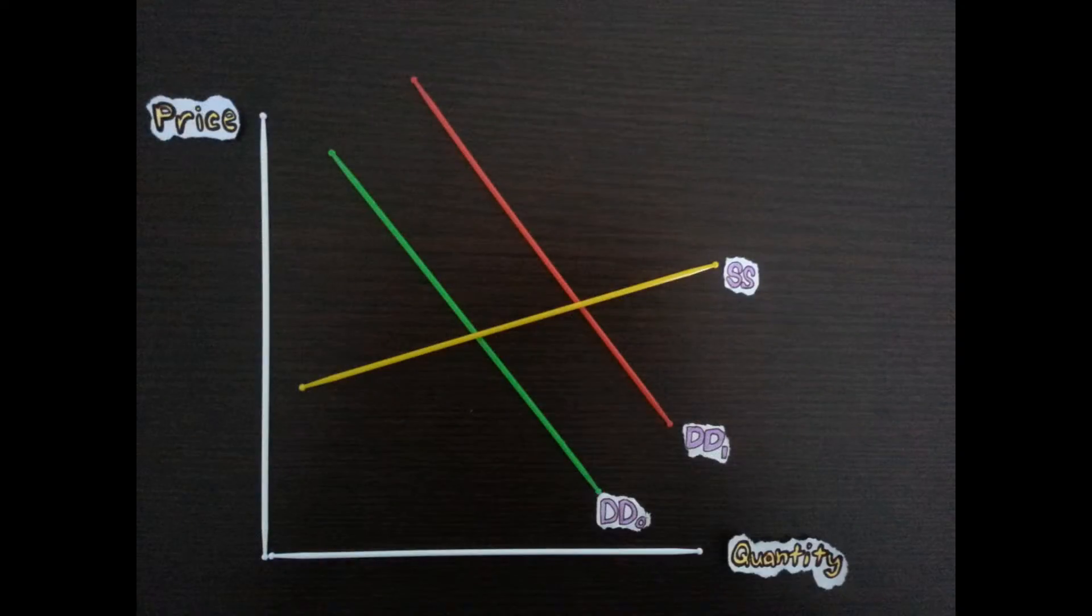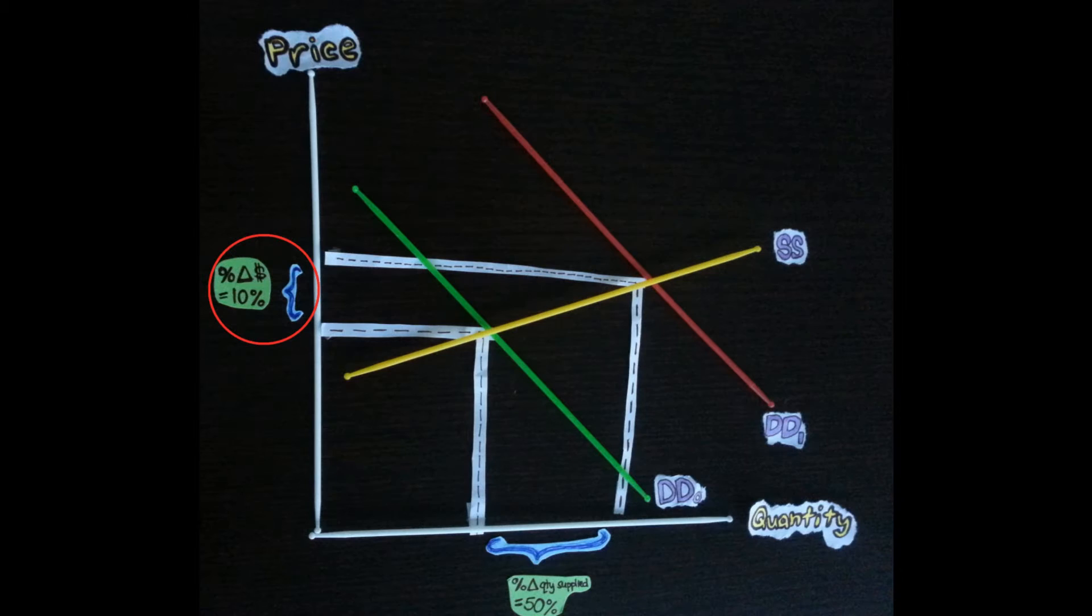Graphically, the supply curve is gently sloped. The bigger the magnitude, the more gently sloped the supply curve would be. If the price of margarine increases by 10% and the quantity supplied increases by 50%, the PES coefficient would be 5.